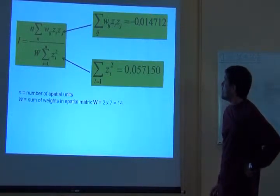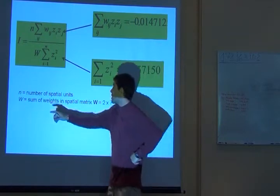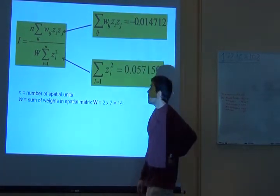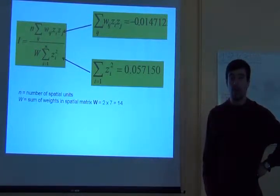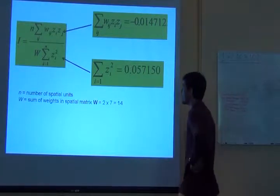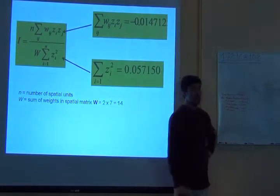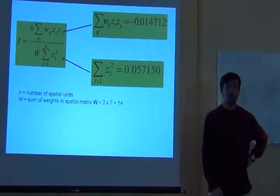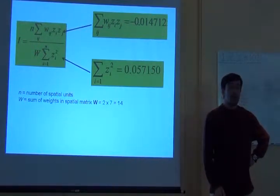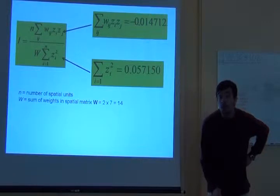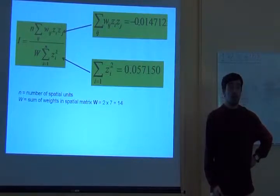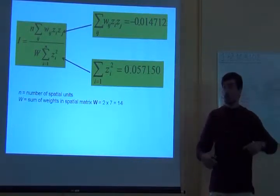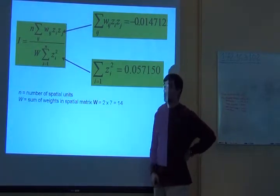Here they are. n lowercase is usually the number of sites we have or the number of units in the analysis, which happens to be 8. And W uppercase, it's not 7. It's 14. Why is it 14 and not 7? It's only half the matrix. I was showing only half of the matrix. But there are connections in both directions. So, I must multiply the number of connections by 2.